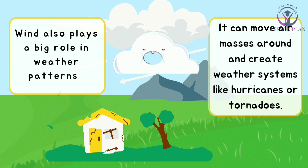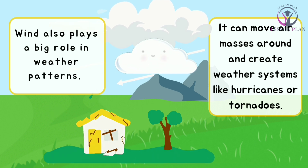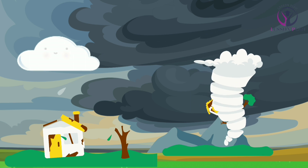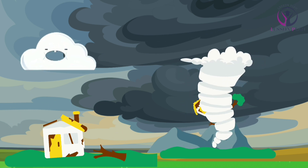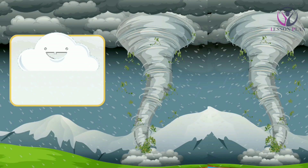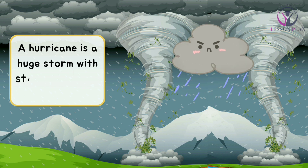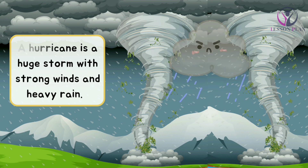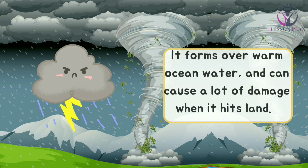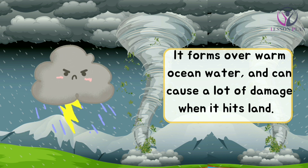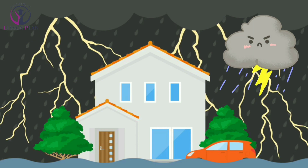Wind also plays a big role in weather patterns. It can move air masses around and create weather systems like hurricanes or tornadoes. A hurricane is a huge storm with strong winds and heavy rain. It forms over warm ocean water and can cause a lot of damage when it hits land.